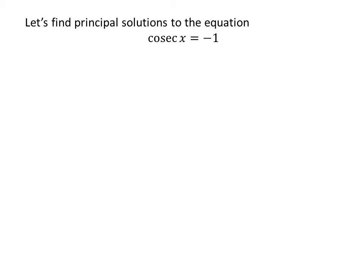Let us first find the principal solutions to the equation cosecant of x is equal to minus 1. We know the solutions to the trigonometric equation for which x is greater than or equal to 0 and less than 2 times pi are the principal solutions.